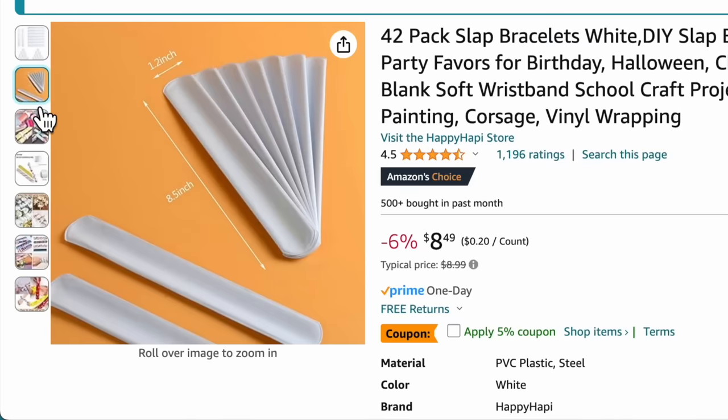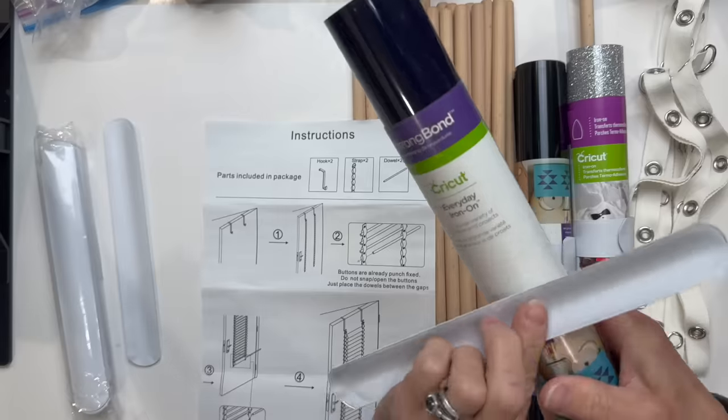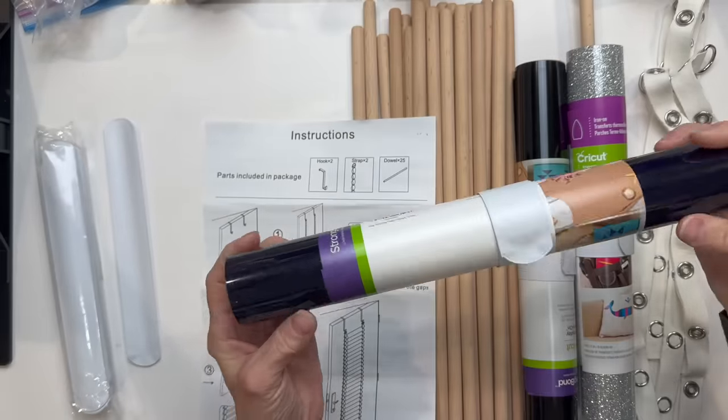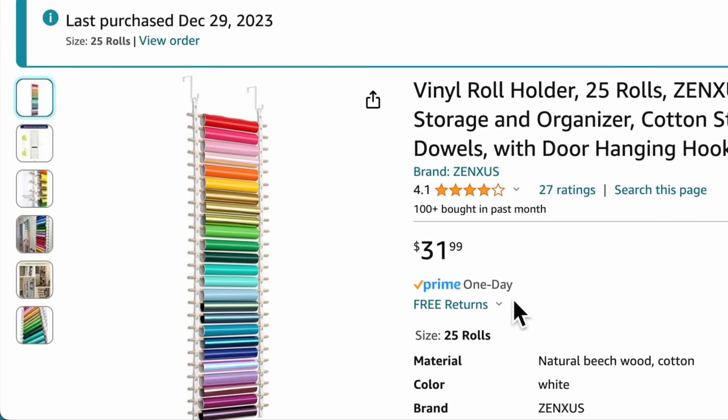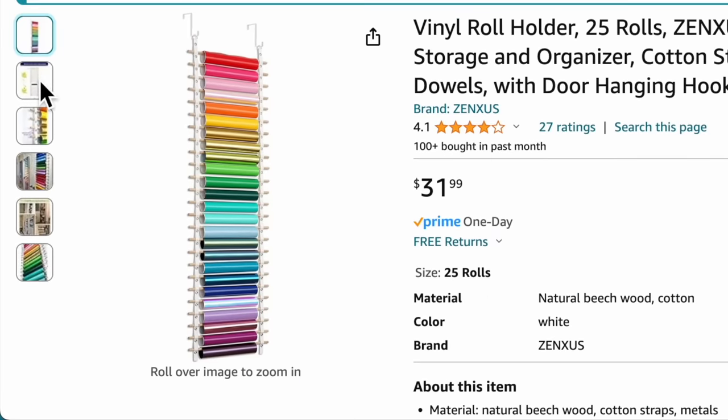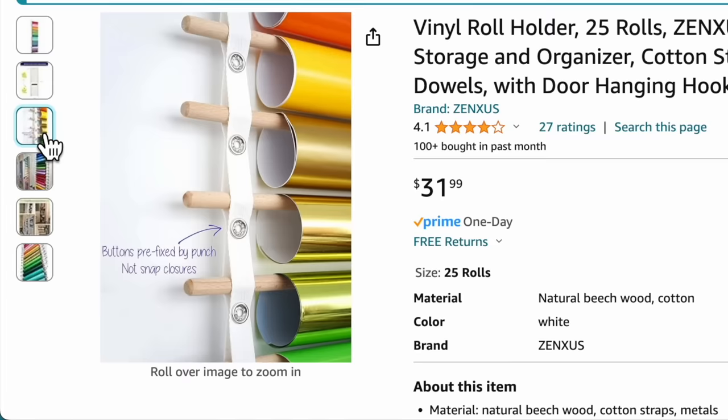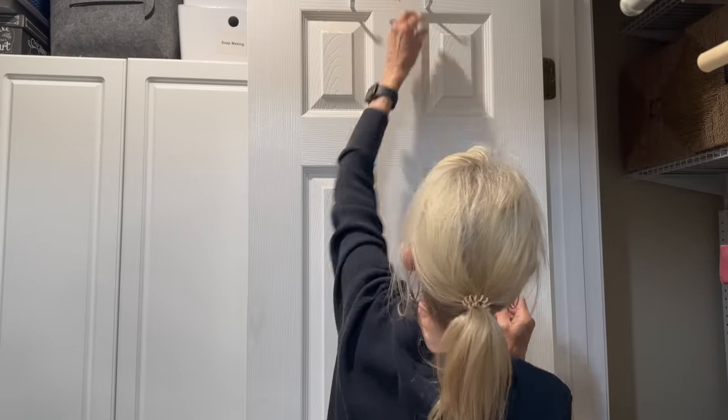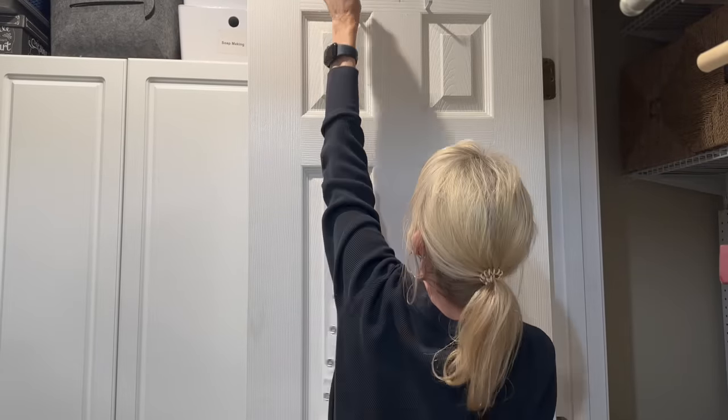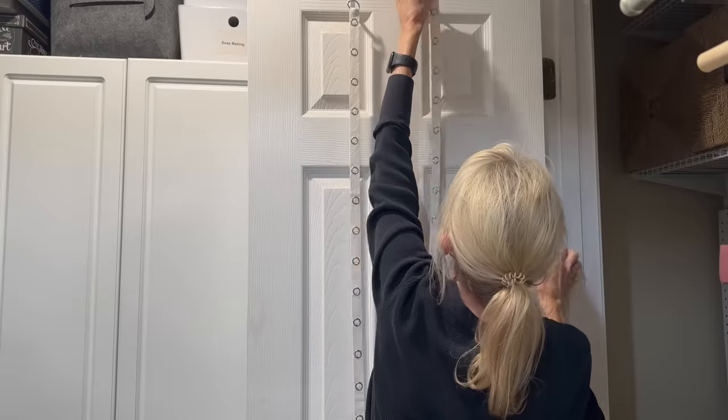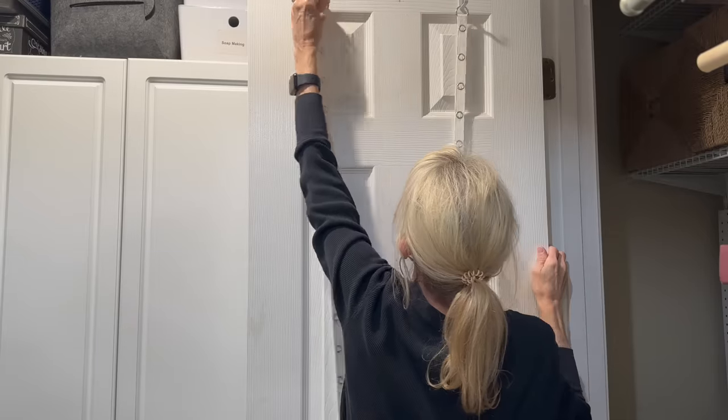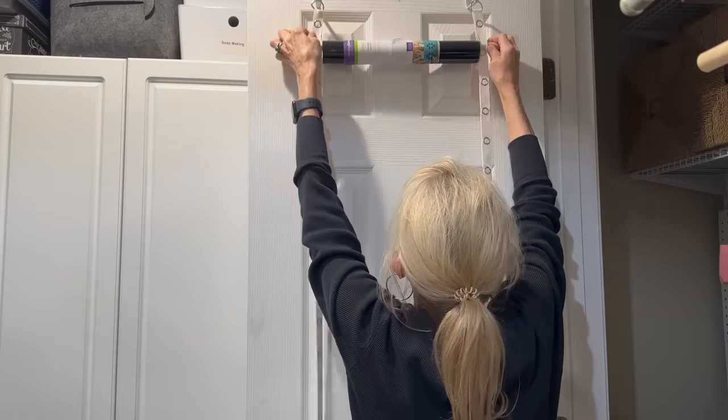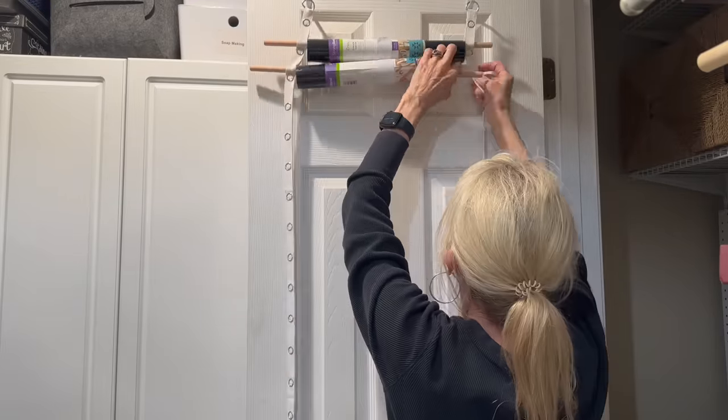I ordered some of these little slap bracelets off of Amazon to wrap around my vinyl. All you do is just take it and it snaps right around it and holds it in place. It keeps it from unraveling while it's hanging up. This is the unit that I got. This is what it looks like when it's completely put together and it holds 25 rolls. So it held all the vinyl that I had. This is how easy it is to install. You just hook it over the top part of your door. You add your little straps and it comes with some pretty thick little dowel rods. This is a real quick and easy way to store your vinyl.